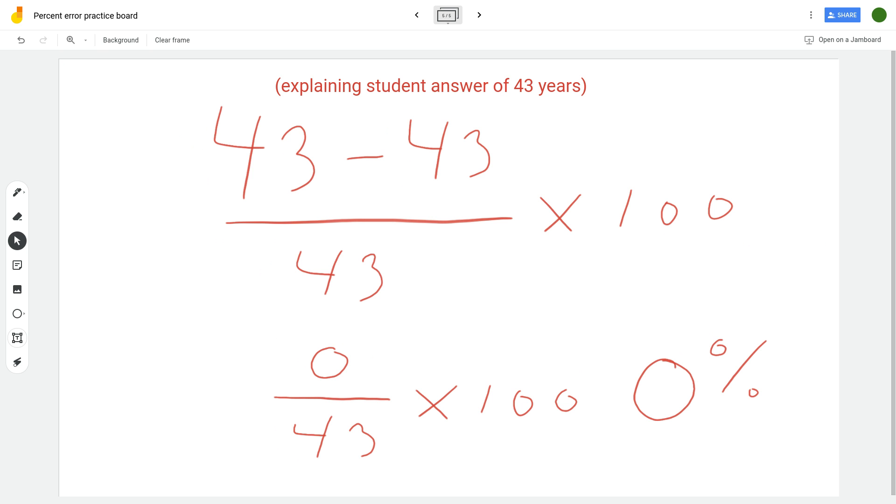So if you have a difference from the accepted value as zero, and anytime you have zero divided by anything is zero, so zero times 100 is zero. And so this is how it would flow through to get a zero percent error. That's exactly the accepted value, so that was an exact guess of my age.